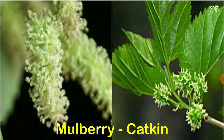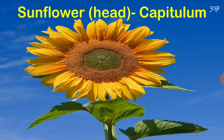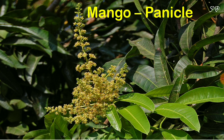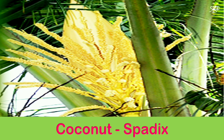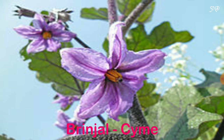The inflorescence of mulberry is catkin. In sunflower, the inflorescence is capitulum or head. In mango, the inflorescence is called panicle. In coconut, it is spadix. In brinjal, the inflorescence is called cyme.